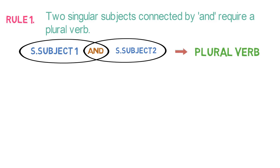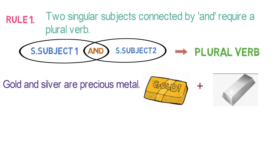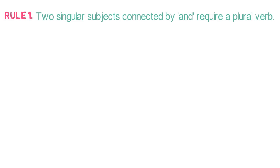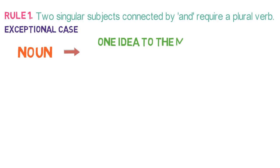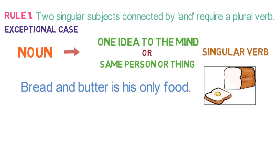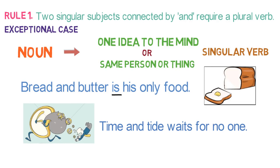For example, 'Gold and silver are precious metals.' Here gold and silver are singular subjects, but combining them both makes the meaning plural, so we used ARE which is plural form. Another example: 'He and I were playing.' Here combining two singular subjects, he and I, makes the combination plural, so we have used plural verb WERE. But there are exceptions: if the nouns suggest one idea or refer to the same person or thing, the verb is singular. For example, 'Bread and butter is his only food,' and 'Time and tide waits for no one.' Here these combinations are treated as a single unit, so singular verbs IS and WAITS are used.